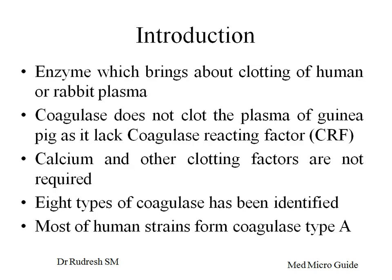Hence, we cannot use the plasma of these animals. The enzyme does not require calcium and other clotting factors as required for the regular clotting process. Eight types of coagulase have been identified. Most of the human strains form coagulase type A.